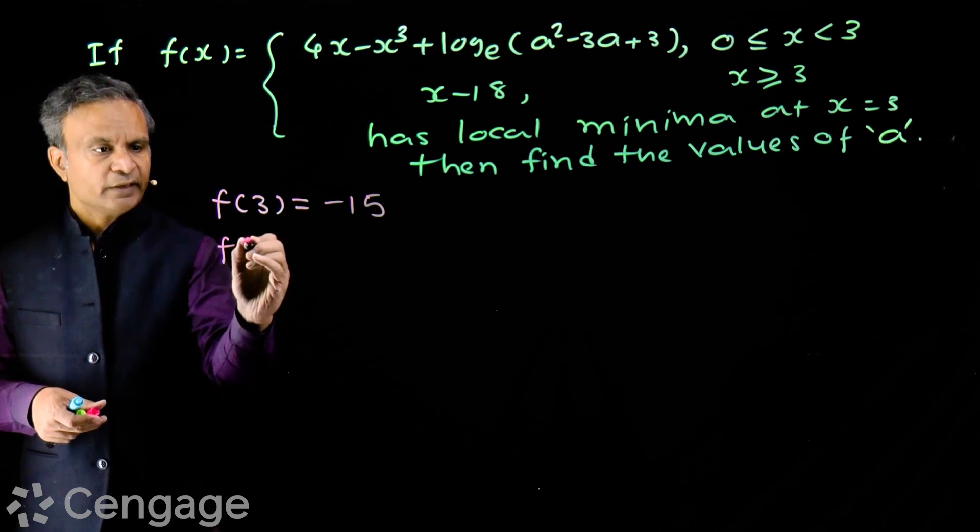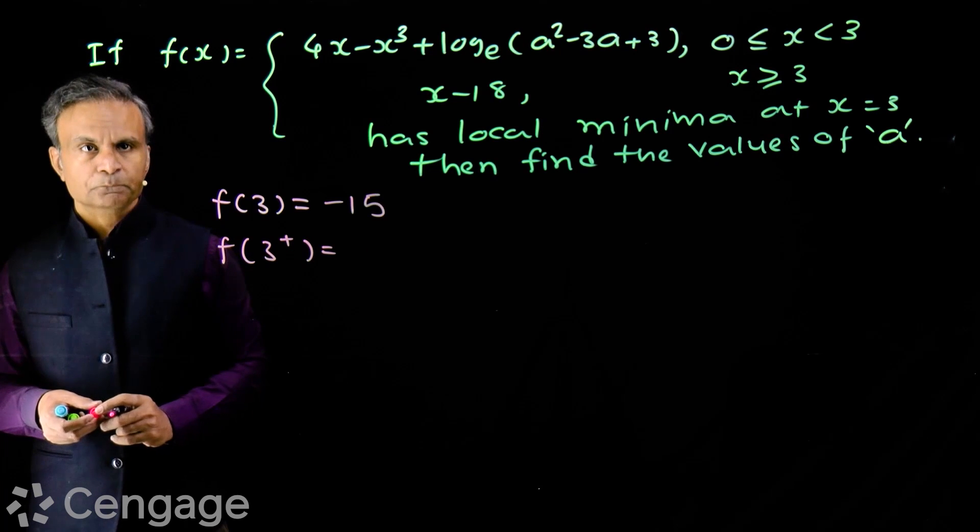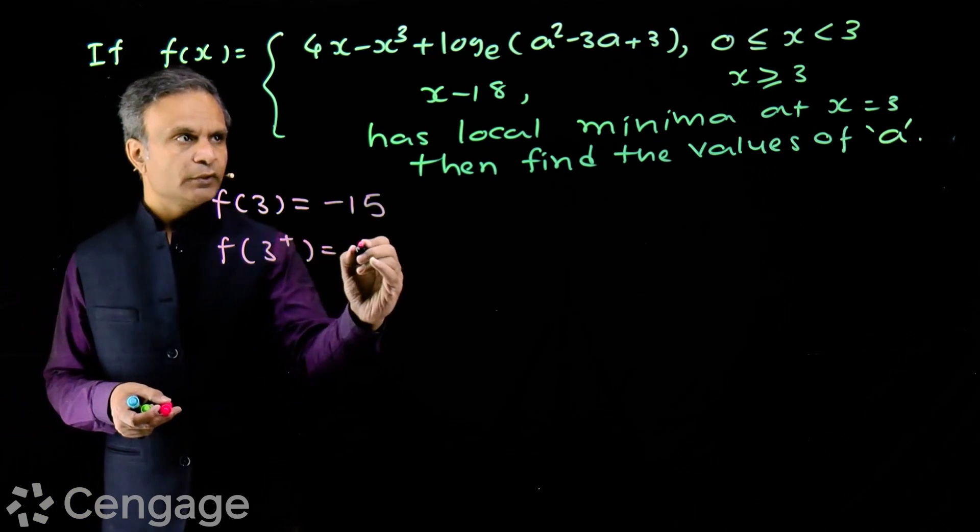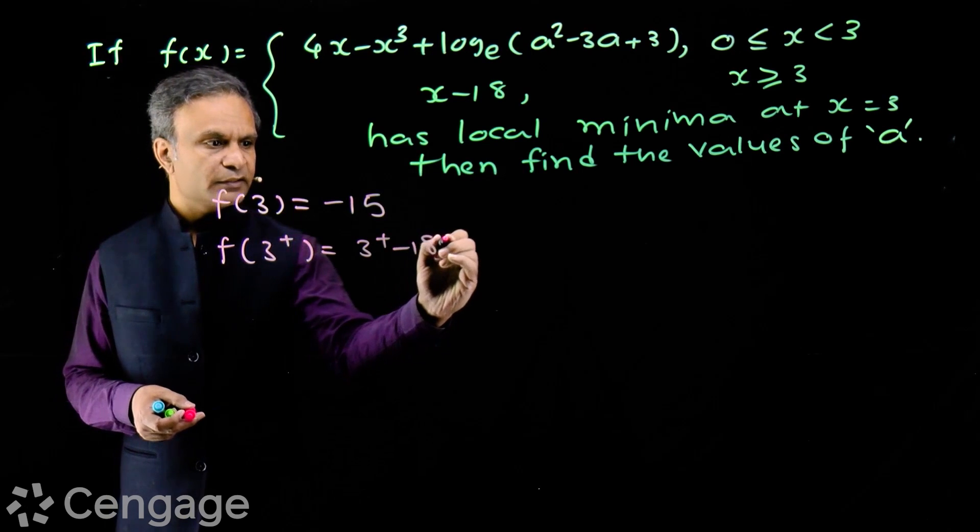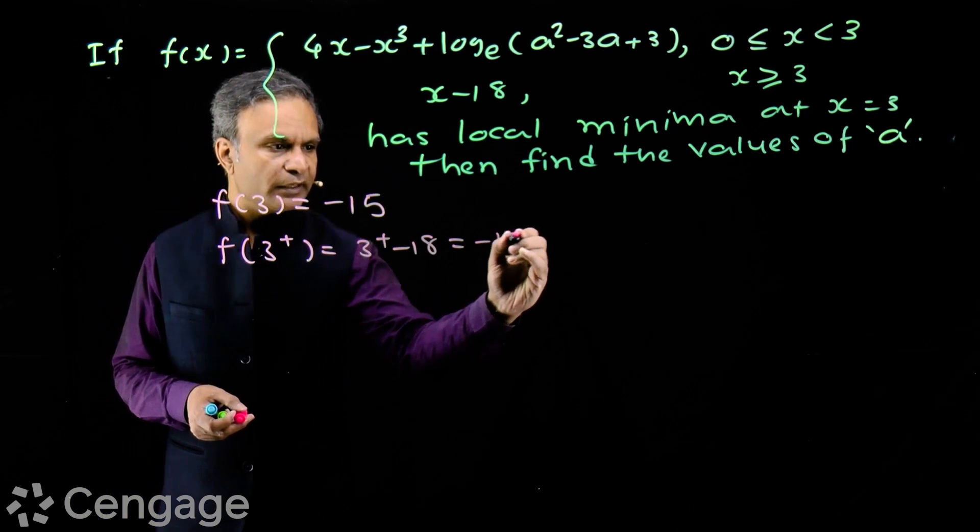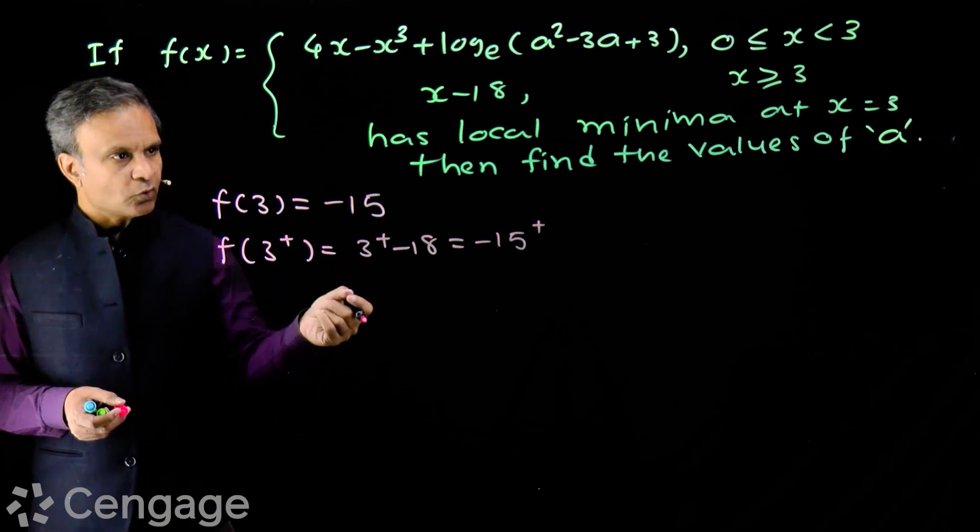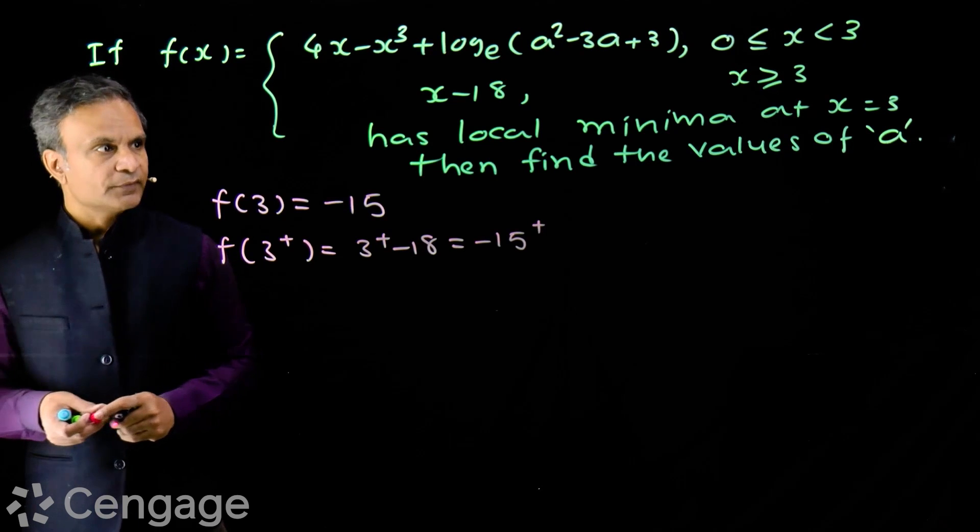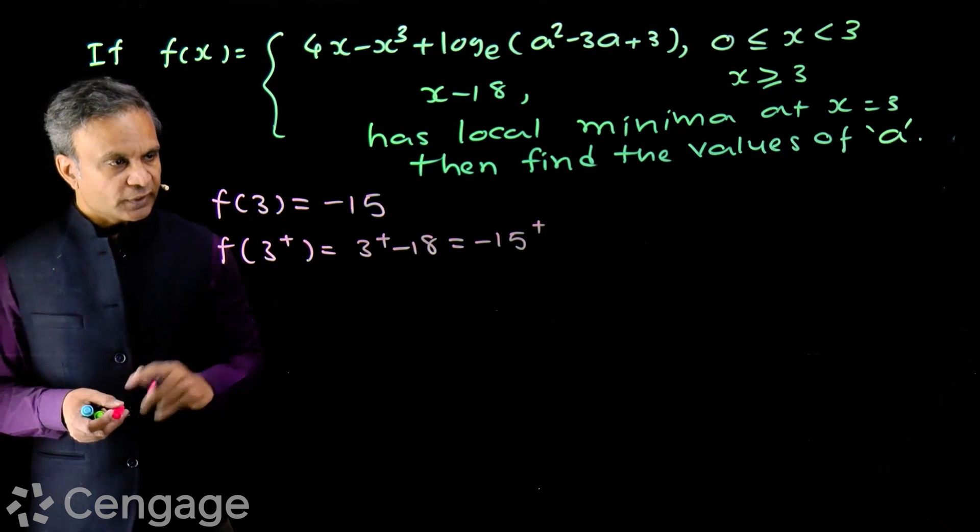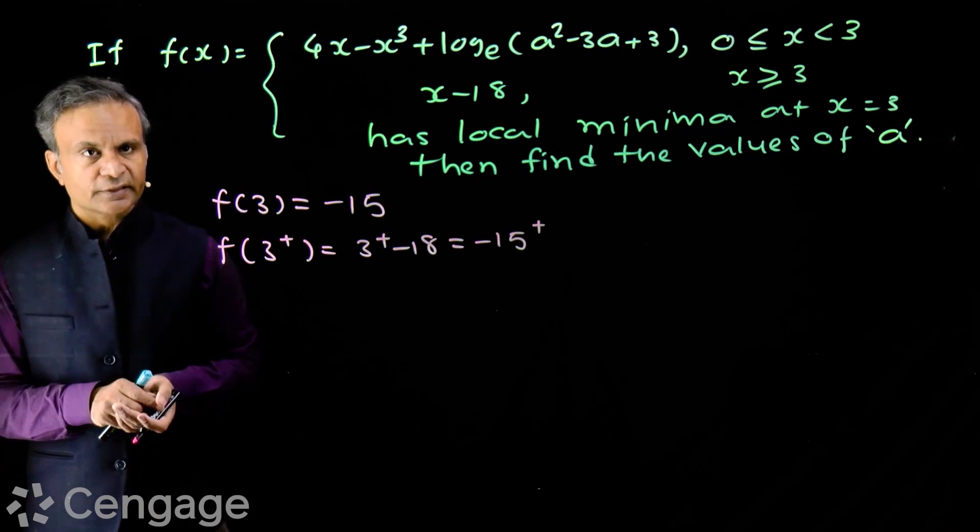What will be f of 3 plus? f of 3 plus will be 3 plus minus 18. 3 plus minus 18 will be minus 15 plus. Value will be slightly more than minus 15. So, right neighbor is more than f of 3.